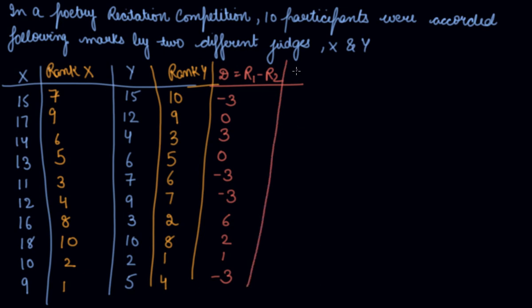Now, you will find out the square of these differences. That is, 9, 0, 9, 0, 9, 9, 36, 4, 1, and 9. So, the sum of D square, you will get it as 86.